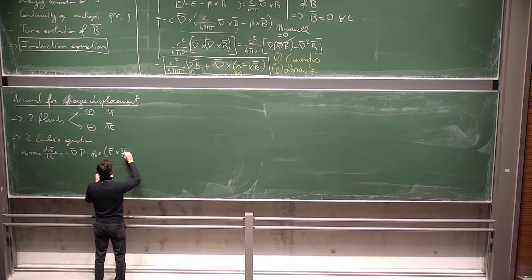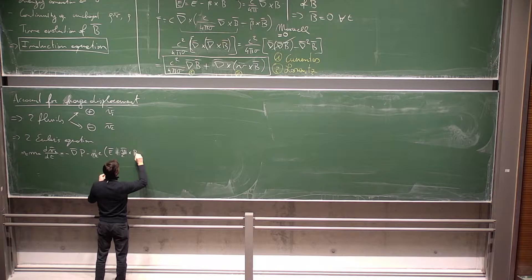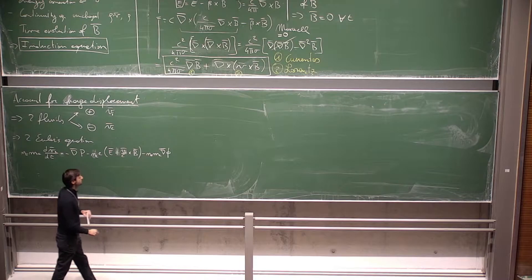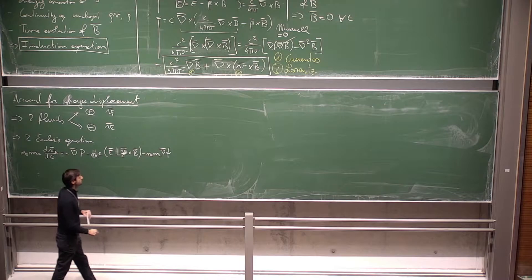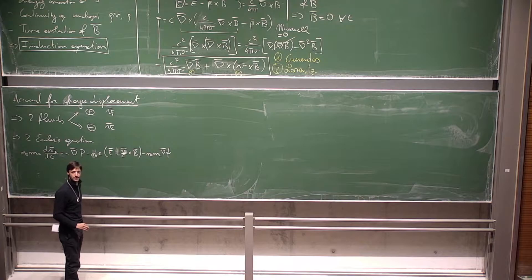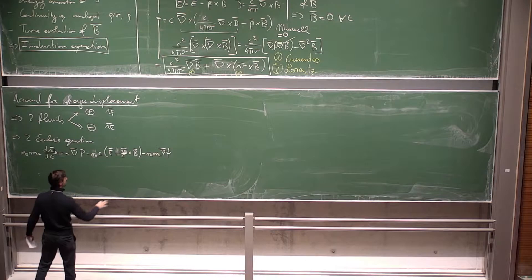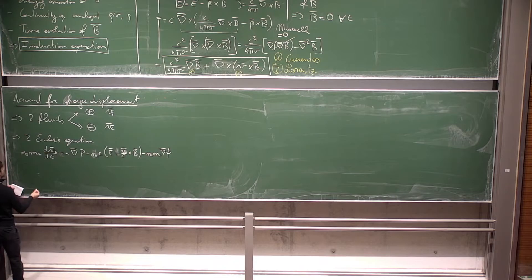The Euler equation for electrons is: N_e m_e dv_e/dt = -∇P_e - N_e eE + N_e e(v_e/c)×B + N_e m_e g, where the terms represent pressure gradient, electric force, Lorentz force, and gravity respectively.